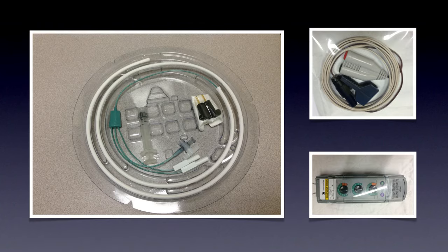Your supplies will include the pacing wire in a sealed package with a protective sleeve — this is sterile. You'll also have your extension wire, which is usually sterile, and your pacing generator. Pay particular attention to the syringe packaged with your pacing wire — do not lose that syringe; it is very important, and we'll explain why shortly.